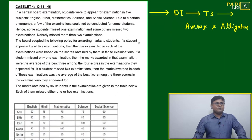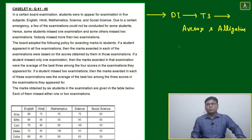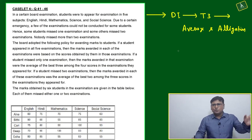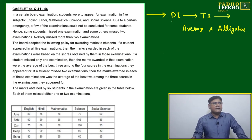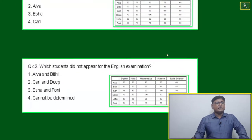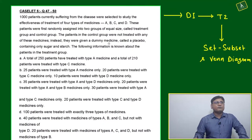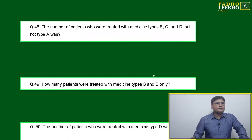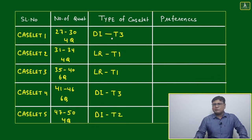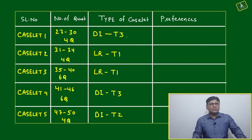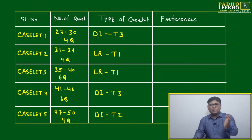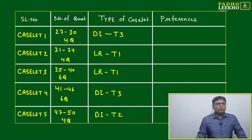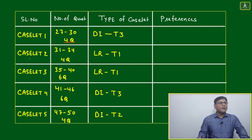Your third caselet also has LR Type 1 — distribution — so move on to the fourth caselet. This is a unique method to improve your performance because finally the world sees performance, not the effort you made. Caselet four is DI again based on Type 3 — average and allegation — same type as caselet one. Move to caselet five: DI based on Type 2 — set, subset, and Venn diagram. After scanning all five caselets, on rough paper during the exam or mock test, write a simple table: caselet one has four questions numbered 27 to 30, DI Type 3.